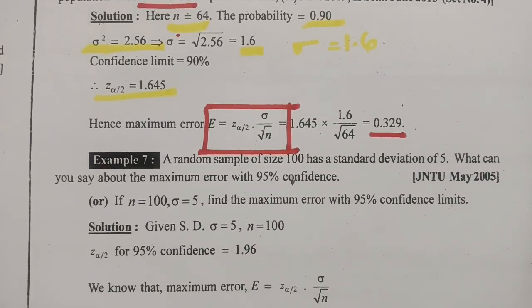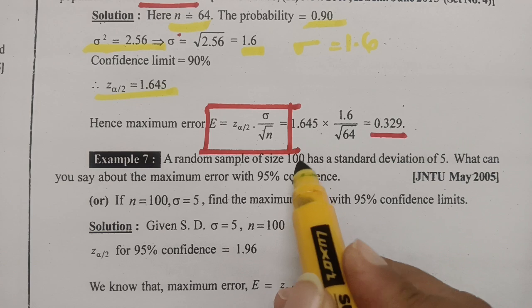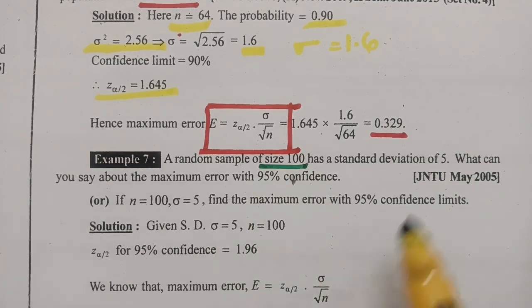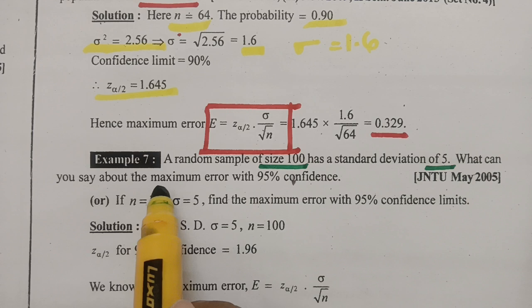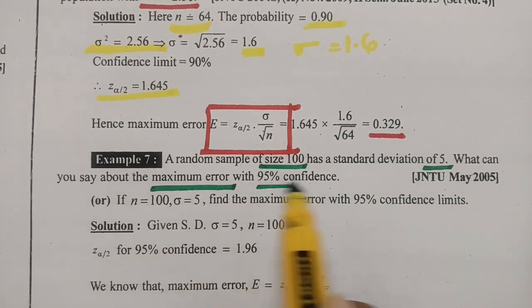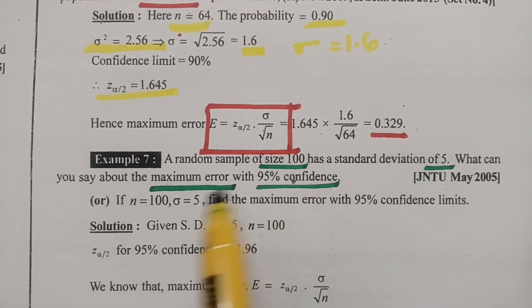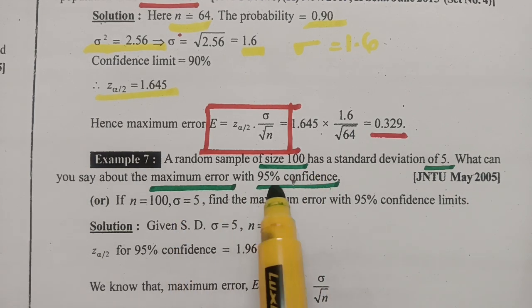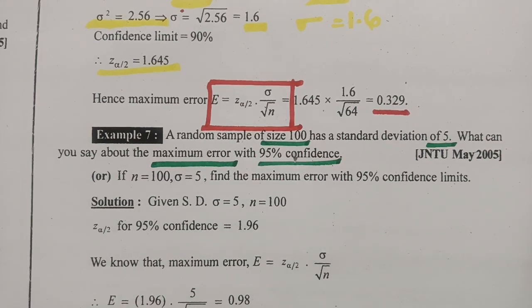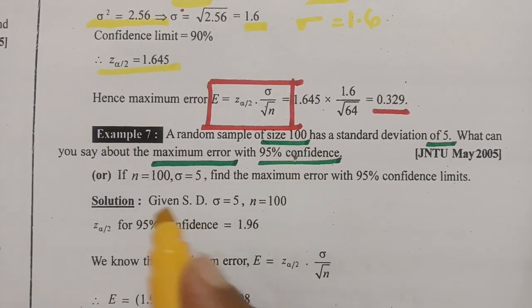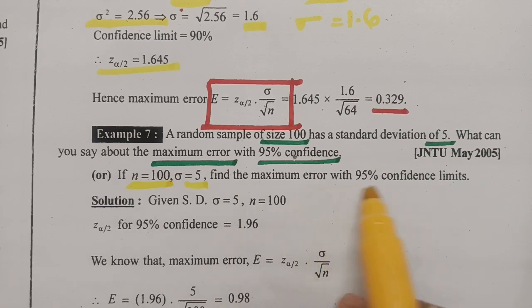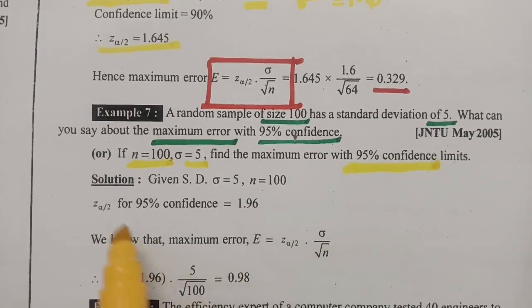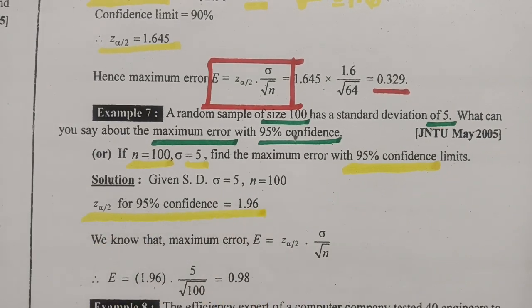The next question: the random sample size N is equal to 100 and standard deviation is 5. What can you say about the maximum error for 95% confidence? N is equal to 100 is given, standard deviation means sigma is given as 5. For maximum error with 95% confidence limits, Z alpha by 2 is equal to 1.96.